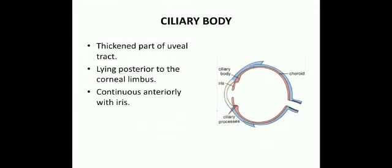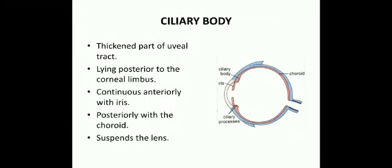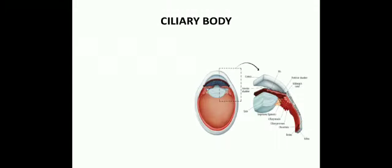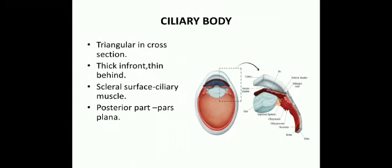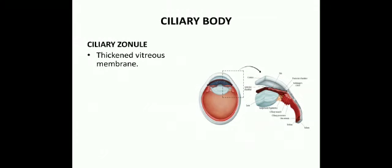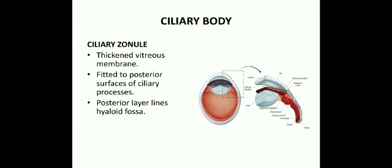The ciliary body is a thickened part of the uveal tract lying posterior to the corneal limbus. It is continuous anteriorly with the iris and posteriorly with the choroid, and it suspends the lens. It is triangular in cross-section, thick in front and thin behind. The scleral surface shows the ciliary muscle; the posterior part is known as the pars plana and the anterior part as the pars plicata.